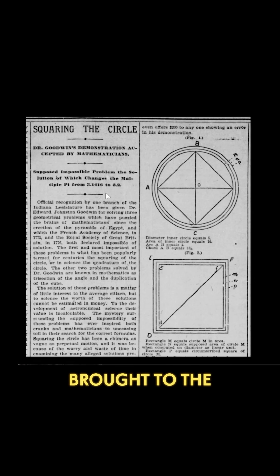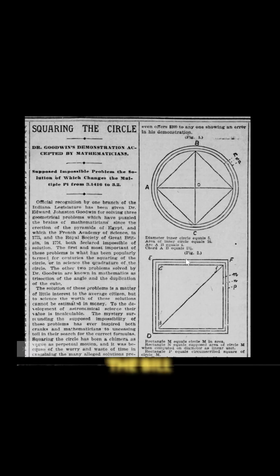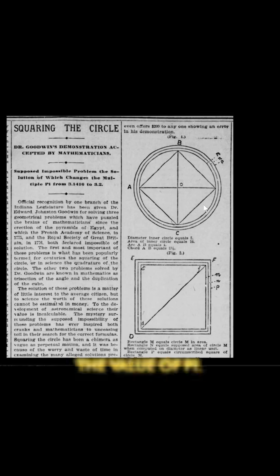In 1897, House Bill Number 246 was brought to the Indiana General Assembly. The bill effectively claimed to fix the value of pi.